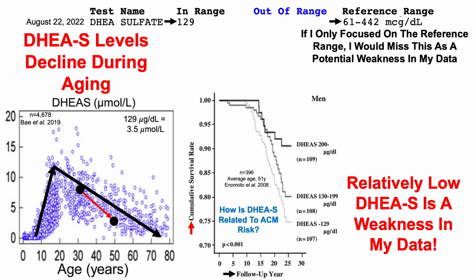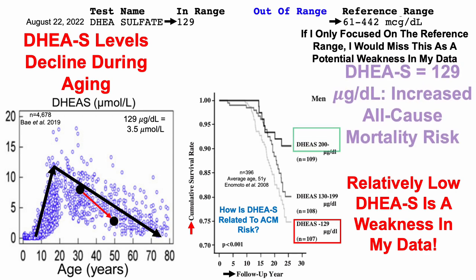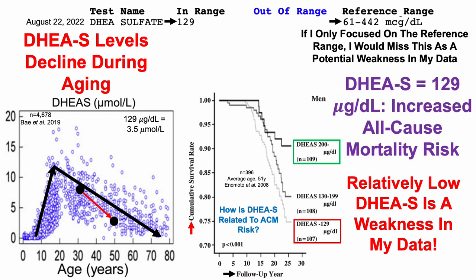We can see that here — we're looking at cumulative survival, or all-cause mortality risk, on the y-axis plotted against follow-up. This was a long study with a 27-year follow-up, although it only had about 400 subjects. The average age is pretty close to my chronological age, so this data may be directly relevant to me. In that study, people with DHEA sulfate levels less than 129 had a significantly increased all-cause mortality risk compared with people who had higher levels — in this case, more than 200 micrograms per deciliter. So a DHEA sulfate level of 129 micrograms per deciliter puts me at increased all-cause mortality risk.